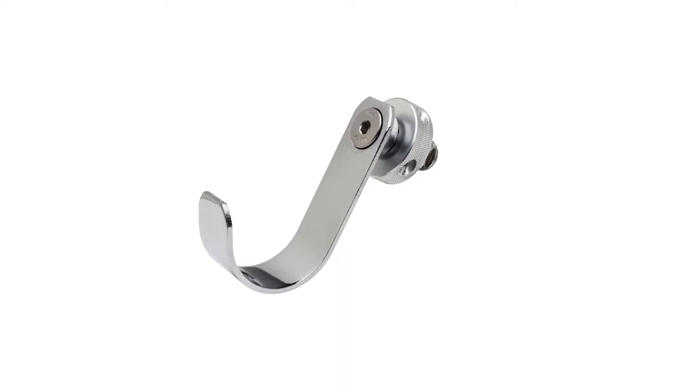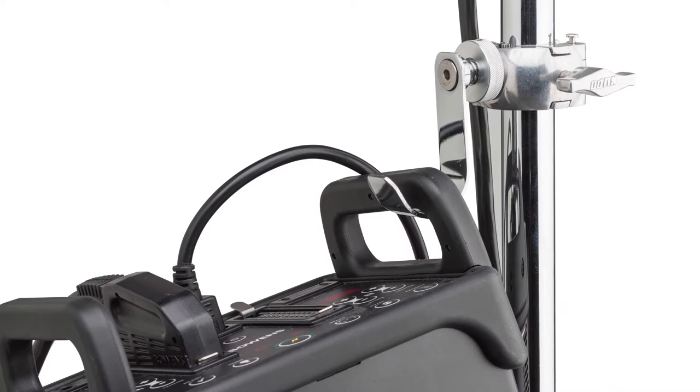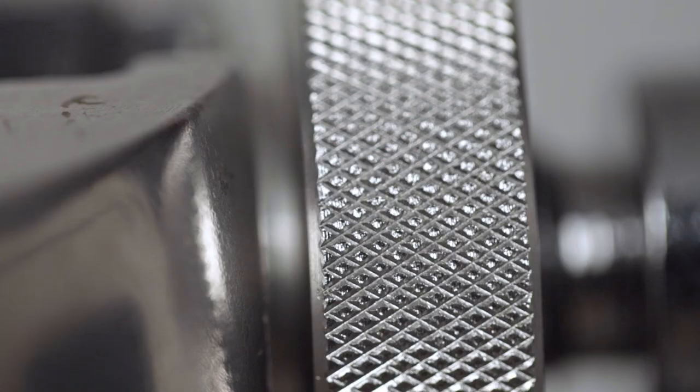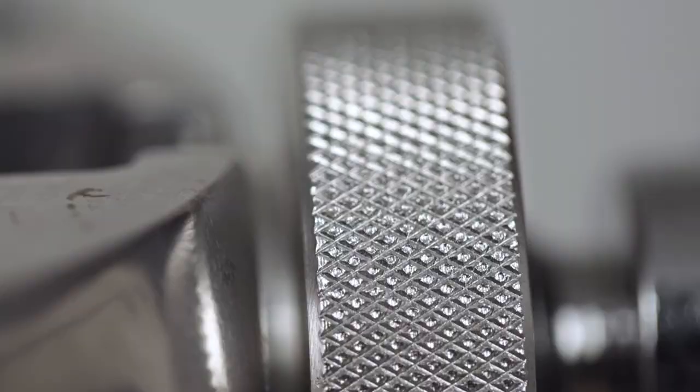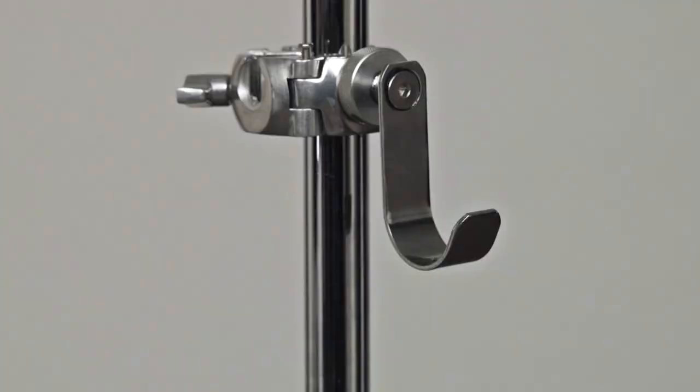The J-hook adapter enables you to hang power packs, cables, or just about anything you can hang from a hook using the three and four-way clamp system. The J-hook adapter features a knurled collar for enhanced grip.